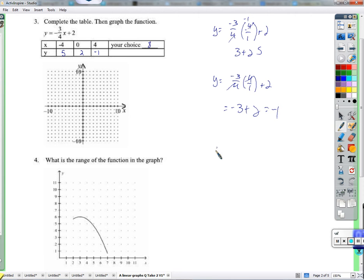Your choice. What would you plug in here? Well, you can see how negative 4 and 4 worked out nicely. It didn't give us any fractions. So maybe 8 or negative 8. So I'll do 8 because it's positive. Y equals negative 3 fourths times 8 over 1, plus 2. Cancel. Now this leaves us with a 2. Negative 3 times 2 is negative 6, plus 2 is negative 4.